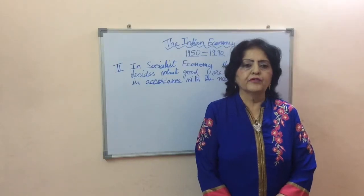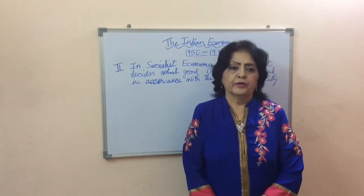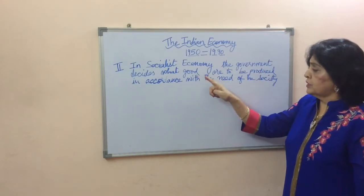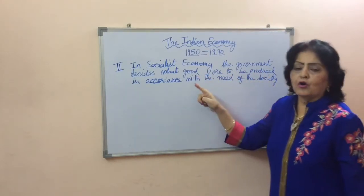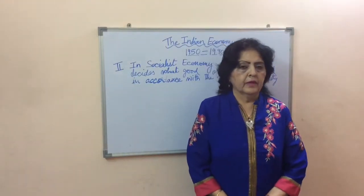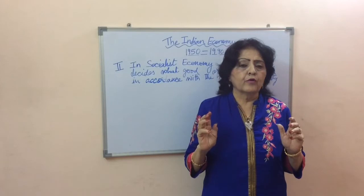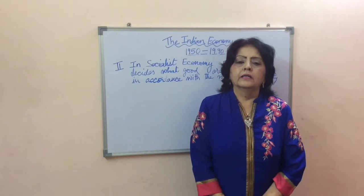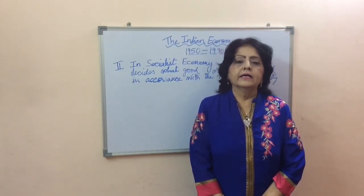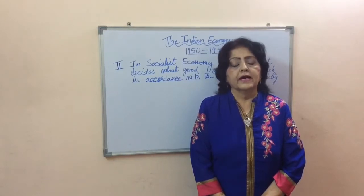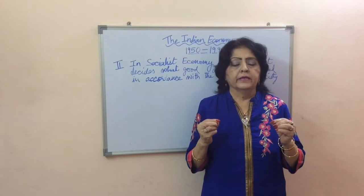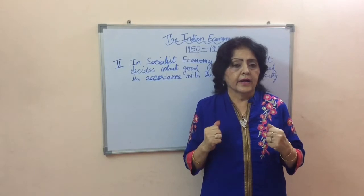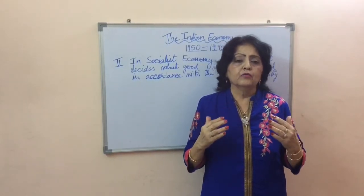The second type is the socialist economy. In a socialist economy, the government decides what goods are to be produced in accordance with the needs of the people. There is no provision for private property because everything is owned by the government. The former USSR and Eastern European countries followed socialist economy, but after the disintegration of the USSR in 1991, they reverted back to democracy.